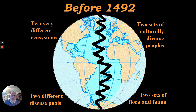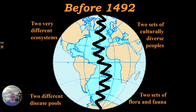Before the year 1492, before Christopher Columbus crossed from the Eastern Hemisphere — that means Europe and Asia — and crossed the Atlantic Ocean to the Western Hemisphere — that means America — they were two very different ecosystems. These ecosystems developed in biological isolation, meaning they didn't have any contact. They had different sets of diseases, animals, plants, and people living on one side of the world and the other.